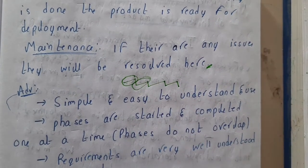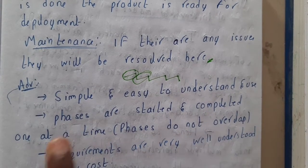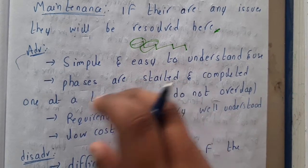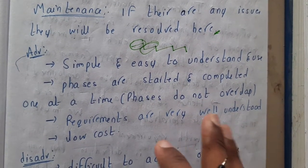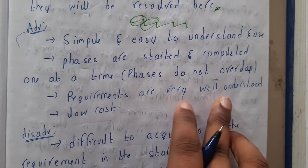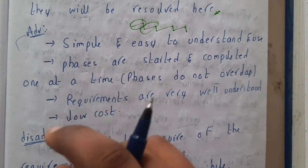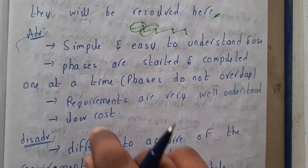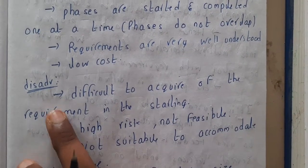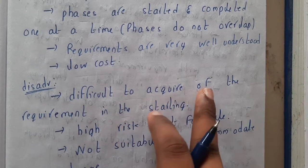Phases are started and completed one at a time and do not overlap — only one phase is active at any particular time. Requirements are well understood, and the cost is low because only one process team is needed, working in a continuous flow through all six stages to deliver the product.